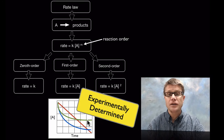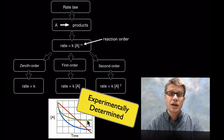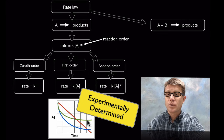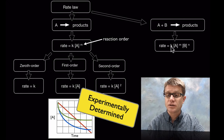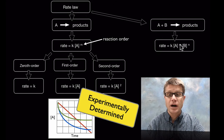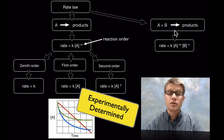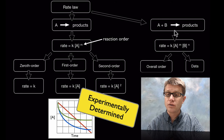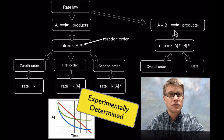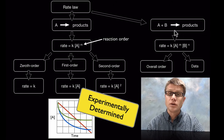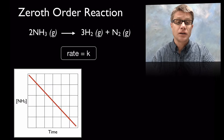An important thing to remember is that we have to determine these reaction orders experimentally — we can't just look at the equation and figure out the rate law. If we have more than one reactant, the rate law still applies: rate equals k times [A]^m times [B]^n. Each reactant can have a different reaction order, and to find the overall order we simply add those values together.